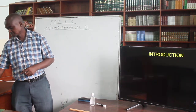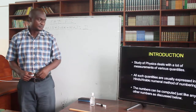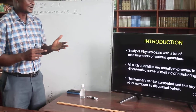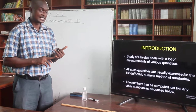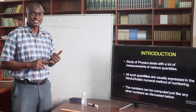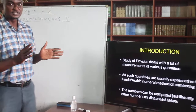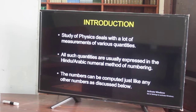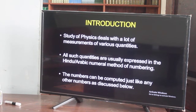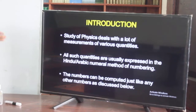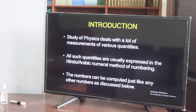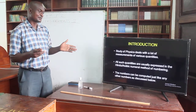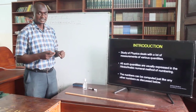As an introduction: the study of physics deals with a lot of measurements. We measure anything that we do in terms of experiment, and it is expressed quantitatively — sometimes qualitatively, but mostly quantitatively. In terms of that, it means we use numbers. All quantities that we will be talking about are expressed in what you call the Hindu-Arabic Numerical Method of Numbering, and the numbers can be computed just like any other numbers, as we will discuss in this lesson.